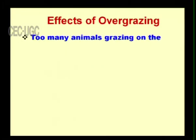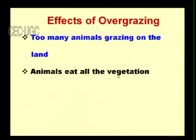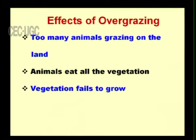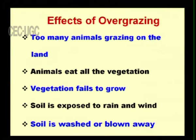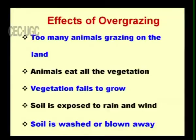With overgrazing, when too many animals graze on the land, they eat all the vegetation and the vegetation fails to regrow. The soil is exposed to rain and wind. Roots and stems normally protect the soil from wind, but without them, erosion happens through both water and air, and the top soil is washed or blown away.